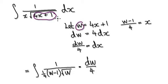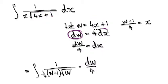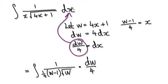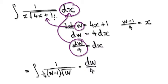So if w equals this, then dw equals this, so dx will equal this. We can put this into here.